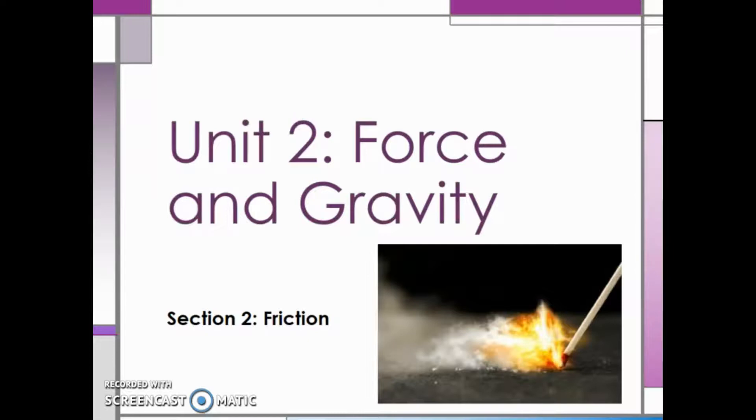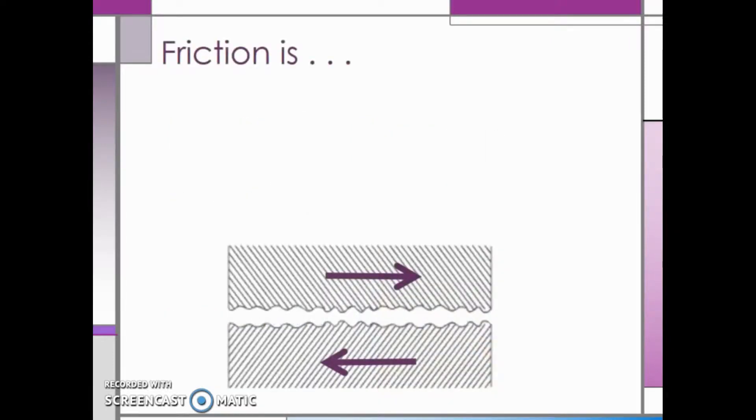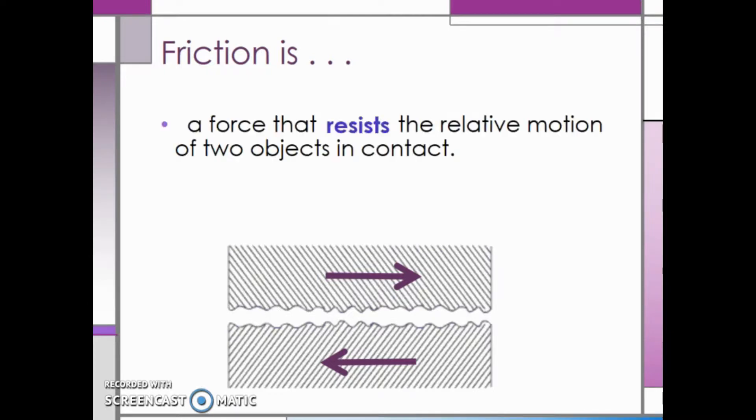The goal of this section is to familiarize you with friction and how we can perform calculations with pulling force, coefficient of friction, and weight. Let's go through a few definitions first. Friction is a force that resists the relative motion of two objects in contact. It is caused by the roughness of the surfaces in contact with one another.